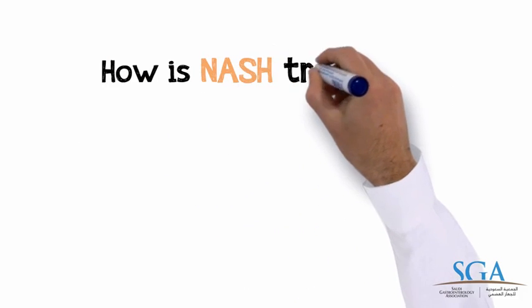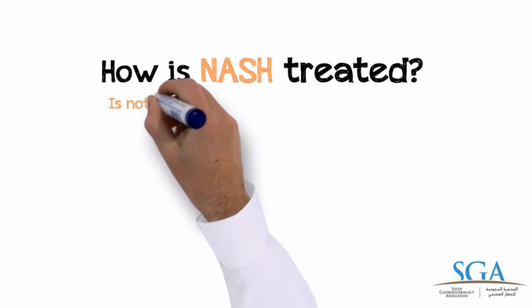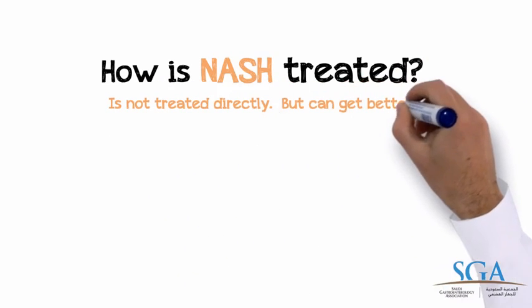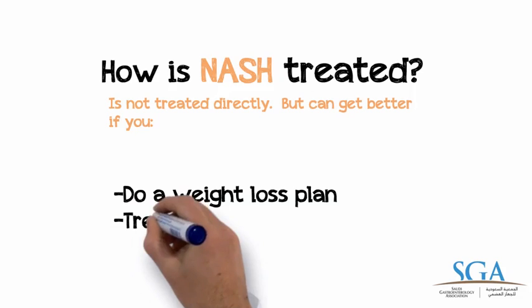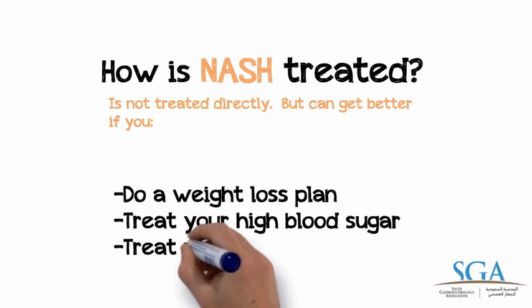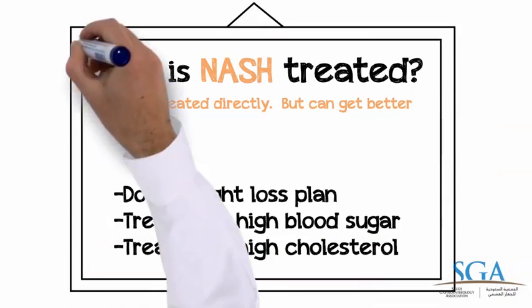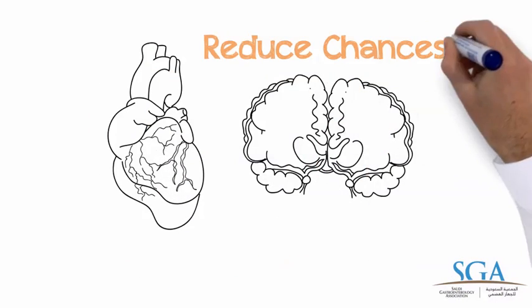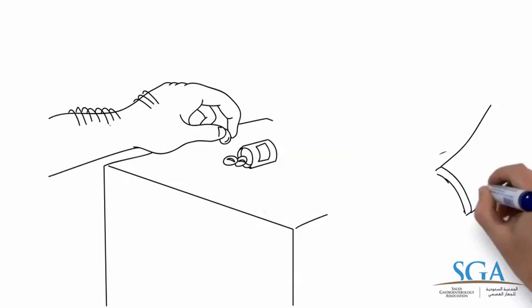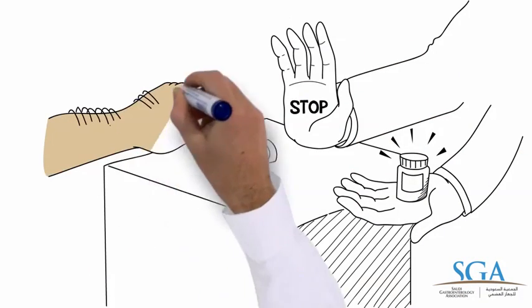How is NASH treated? NASH is not treated directly, but it can get better when other medical conditions that often happen with NASH get treated. Your doctor can help you create a weight loss plan — it's important to do so slowly, and not lose more than 1.5 kg a week — treat your high blood sugar, and treat your high cholesterol. NASH can get better if you follow a balanced and healthy diet, increase physical activity, avoid alcohol, and avoid unnecessary medications. These changes can also reduce your chances of having a heart attack or stroke. If you take a medicine that could be causing NASH, your doctor will stop or change that medicine.